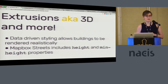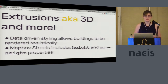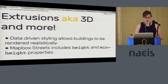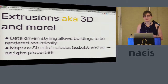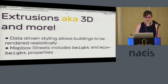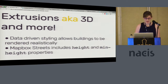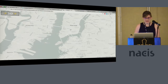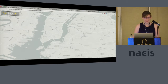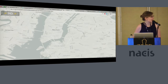Another map design feature we just launched last week is extrusions, the most common example being 3D buildings. So instead of having to style all your buildings with the same height, you can actually realistically style those buildings to their height as encoded in OpenStreetMap. I'll do a quick example of how you would implement that using an out-of-the-box Mapbox style.